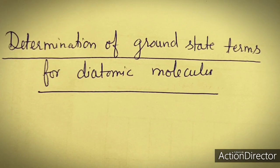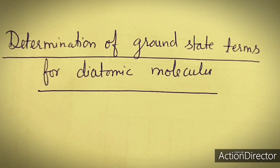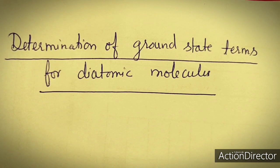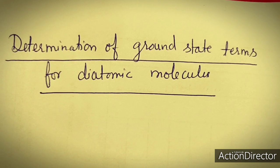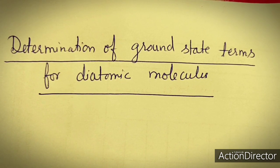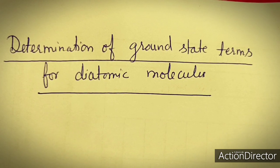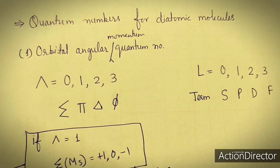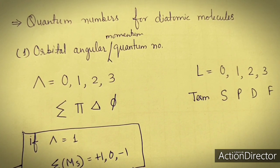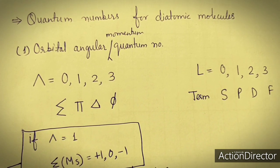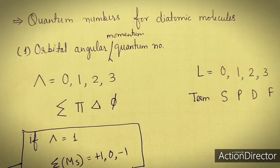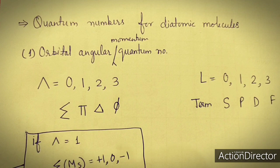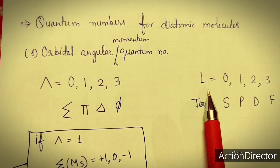Dear students, after calculating the ground state terms for atoms and molecules, in this lecture we will calculate the ground state terms for diatomic molecules. Before starting, we first have to study the quantum numbers for diatomic molecules.